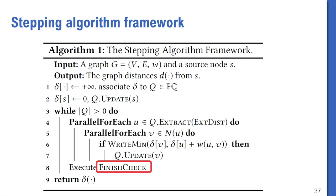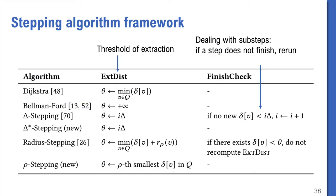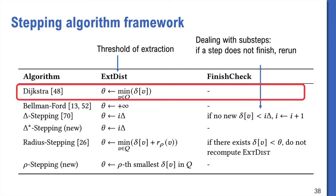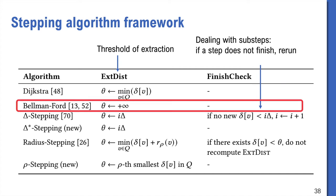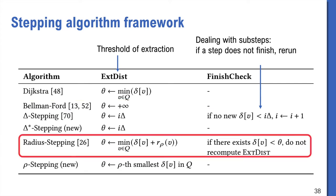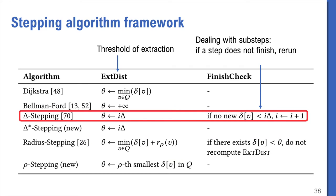Actually, the stepping algorithms differ only in how they select the threshold, and how they do the finish check. For example, Dijkstra just uses the smallest unsettled distance as the threshold. Bellman-Ford uses infinity to process all vertices. For Radius-stepping, it's more complicated. It changes the threshold dynamically based on the current status. Delta-stepping uses a fixed value of i*delta for step i, and continues the sub-step until all unsettled vertices in the range are settled.